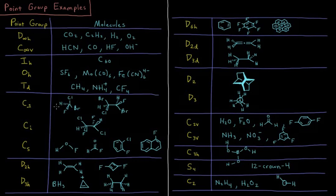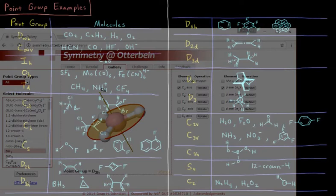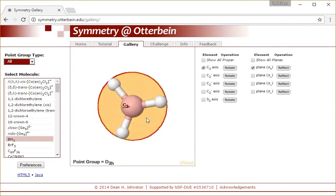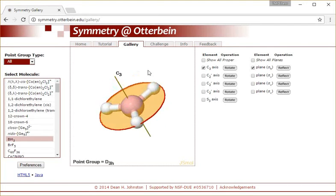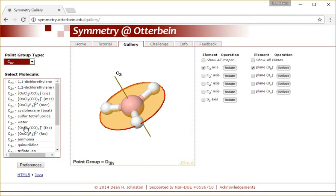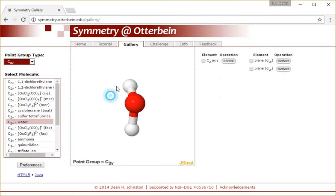As always in this chapter, I'm going to recommend for practice that you use the Symmetry at Otterbein website where you can see a lot of these things and explore them to your heart's desire, very conveniently arranged within different kinds of point groups for visualization purposes.